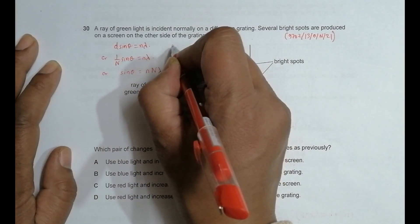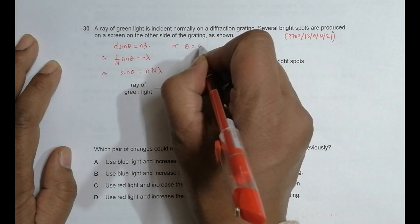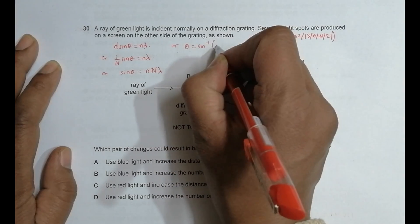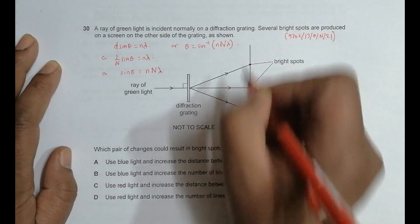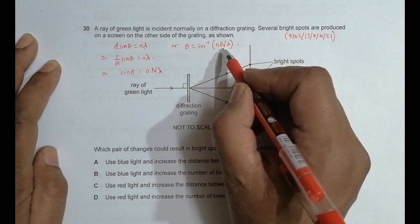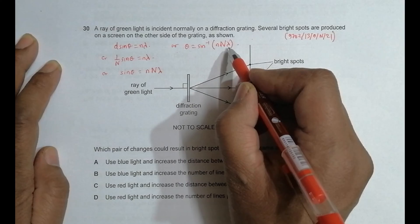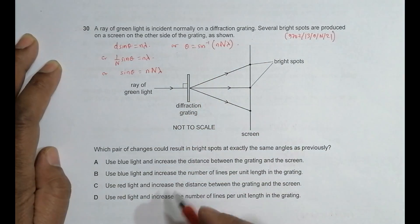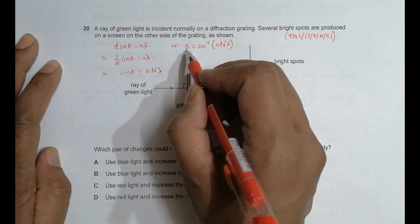Which further gives us theta is equal to sine inverse of n times lambda. So theta depends on three things: one is the order, second is the number of lines per unit length, and another is the wavelength. Now which could produce the same theta here?